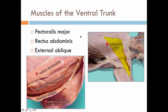Muscles of the ventral trunk — and remember this would be an inferior view. That would be the pectoralis major, seen here on the left side. This is the chest muscle. The rectus abdominis is a parallel muscle. And then the external oblique, which is this flap right here. These muscles — the internal oblique and the transverse abdominus — are deep to the external oblique.